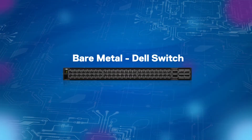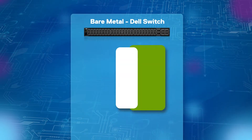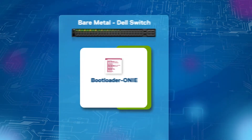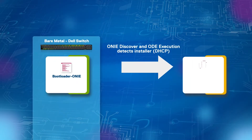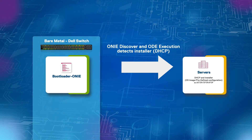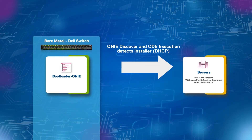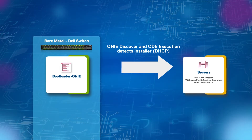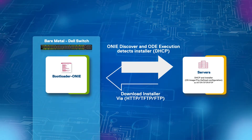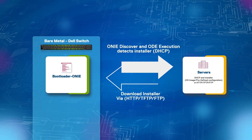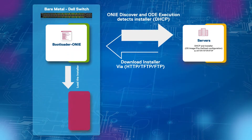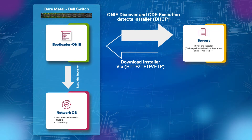The Bare Metal Provisioning process works like this. Step 1: When an ONIE-enabled network switch boots for the first time, the bootloader launches the kernel, which starts the ONIE Discovery and Execution, or ODE, application. Step 2: The ODE uses several methods like local file, DHCP, and multicast discovery protocols to download and locate, via HTTP, TFTP, or FTP, an OS image and predefined configuration once the installer is found. Step 3: The ODE starts the installer, which then proceeds to provision the switches.